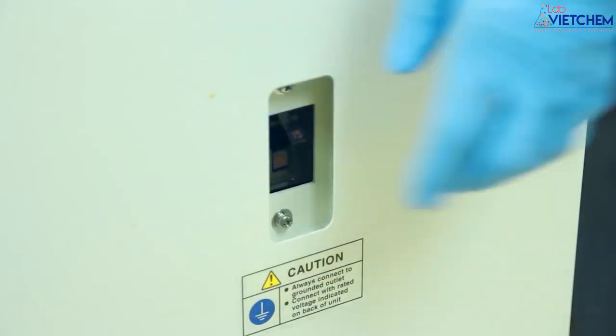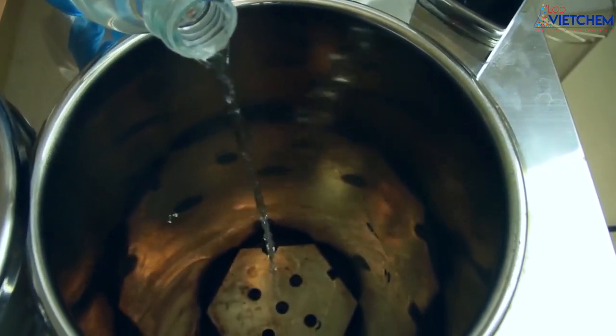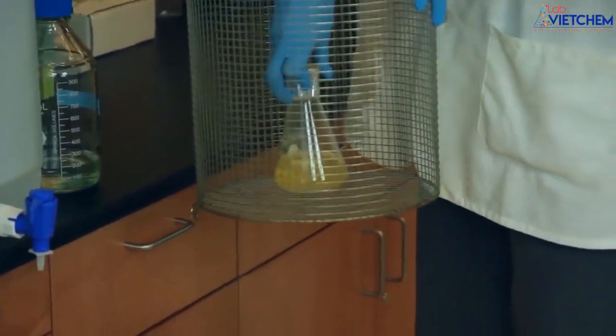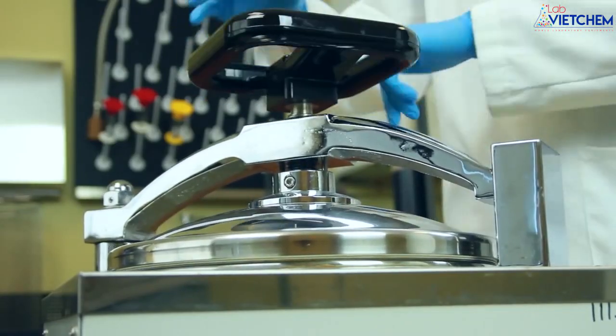Turn on the power and make sure the drain valve is closed. Add deionized water to the level indicator line. Place the flask of culture media into the basket. Insert the basket, close the lid, and turn the handle to create an airtight seal.